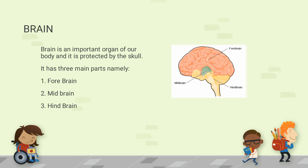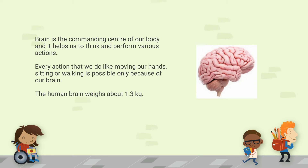The brain is protected by the skull, which is one of the strongest bones. Basically, the brain has three main parts: forebrain, midbrain, and hindbrain. The function of the brain is to tell us what to do and what not to do. Each and every action — like walking, sitting, moving our hands — is all because of our brain.